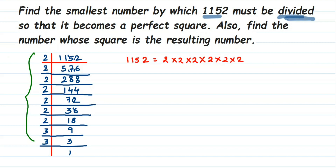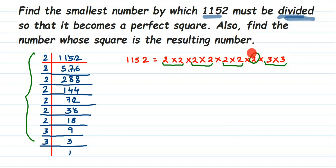So 1152 = 2 × 2 × 2 × 2 × 2 × 2 × 2 × 3 × 3. Once we have written this, we have to start pairing up. Remember, for a perfect square number there will be proper pairing — no extra prime factors left out. You can see three pairs of 2s form, but this one 2 is single — it doesn't have a pair. The 3s are in a pair. So this extra 2 is the unpaired prime factor.